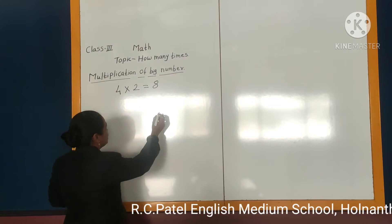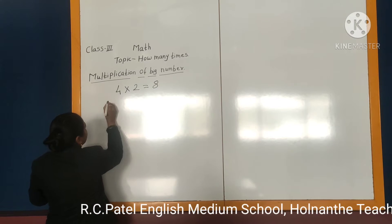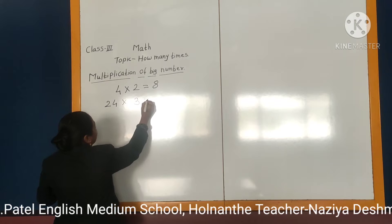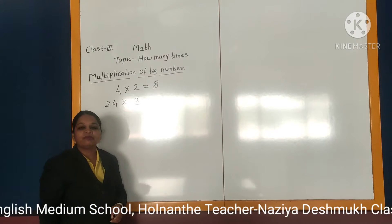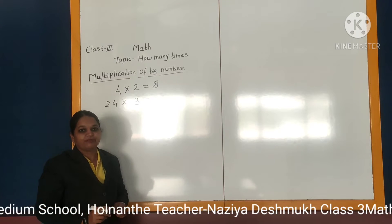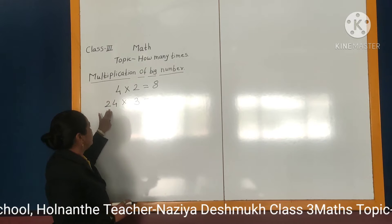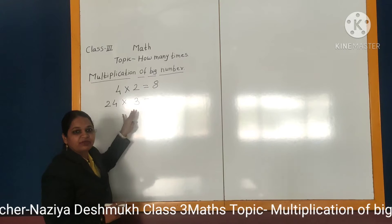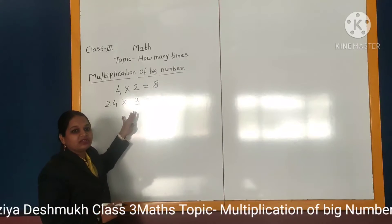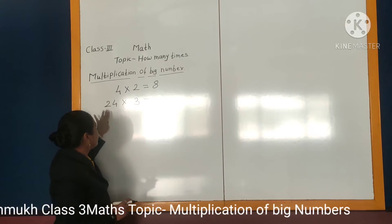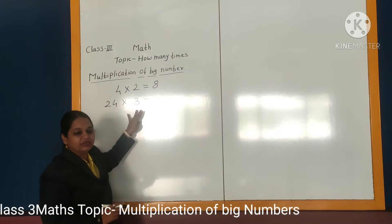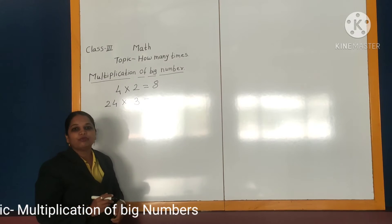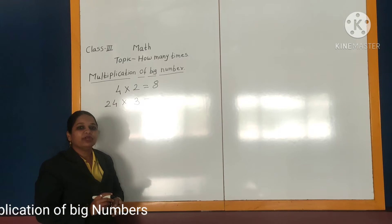For example, if I give you 24 multiplied by 3, how will we do the multiplication of this? Here what is given is 24 multiplied by 3. We could do 24 plus 24 plus 24, or take the table of 24 up to 3, or the table of 3 up to 24 — but that is not simple.